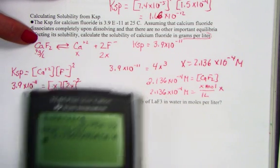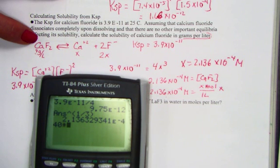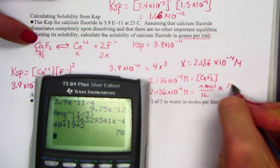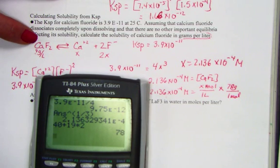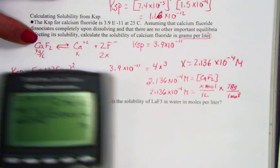Let me add a molar mass for calcium fluoride. We have 40 from the calcium, 19 times 2 on the fluorine. Molar mass is 78 grams per mole.